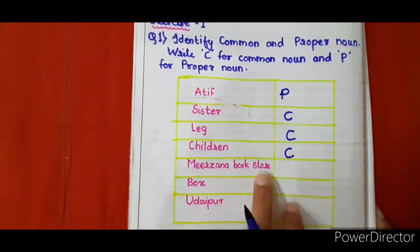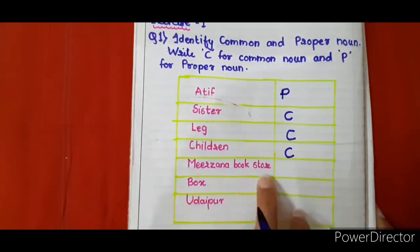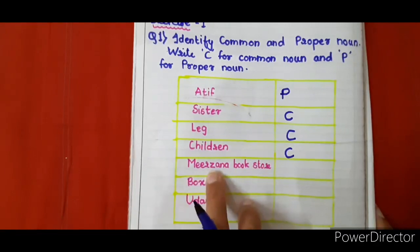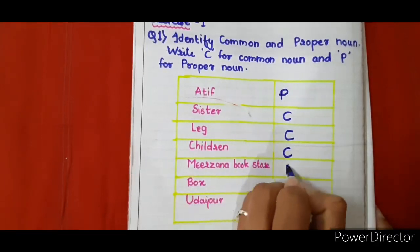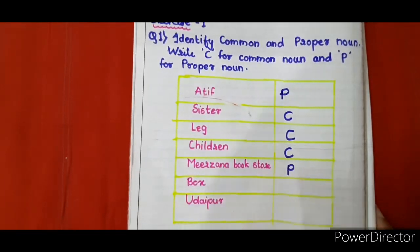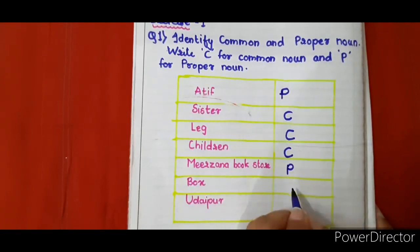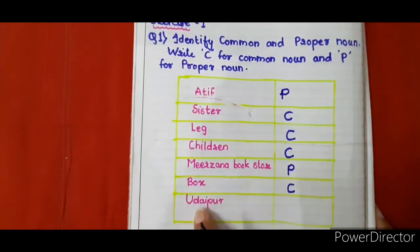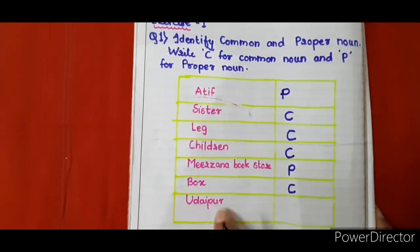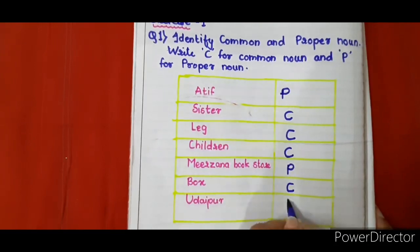Mirzana Bookstore — it is a particular bookstore whose name is Mirzana, so it is a proper noun. Box is a common noun. Udaipur is the name of a particular city, so it is a proper noun.